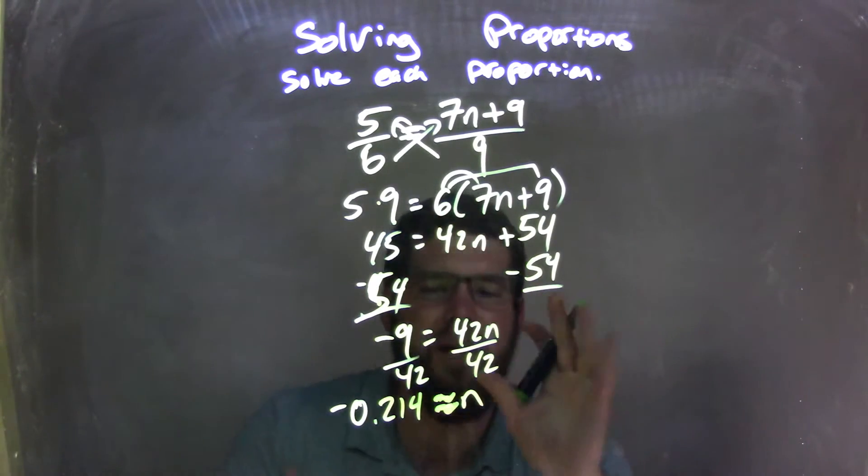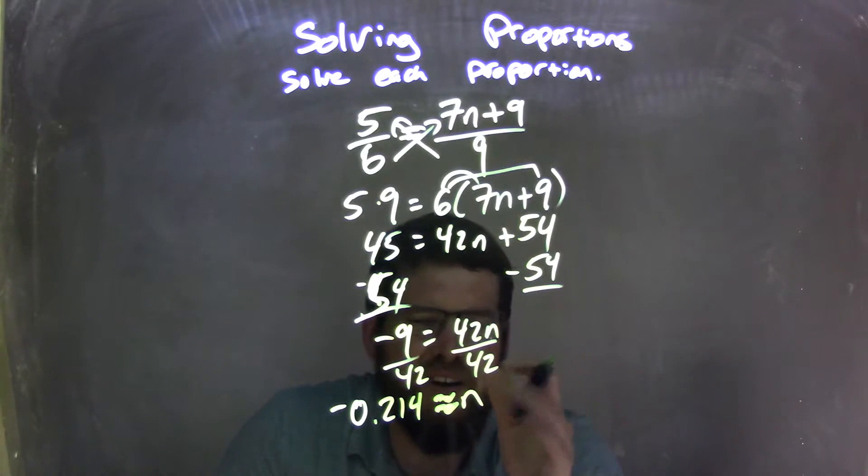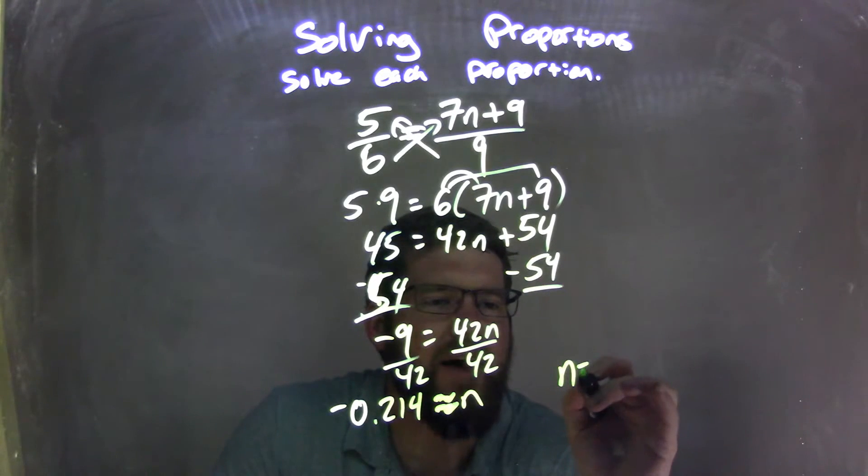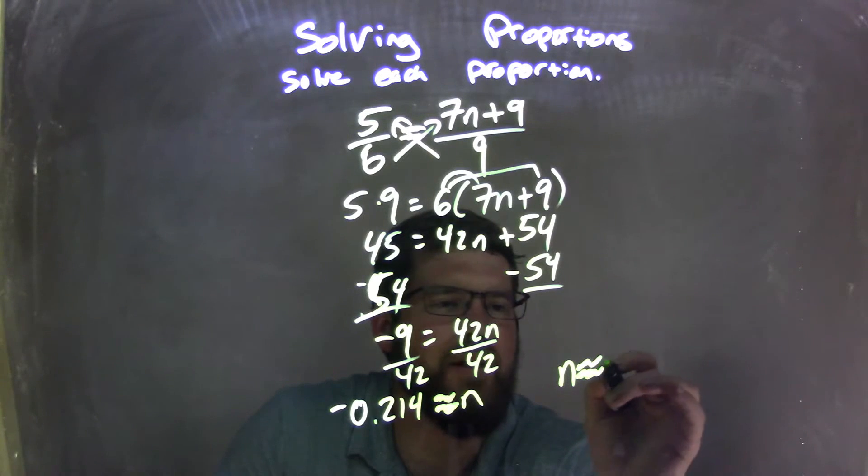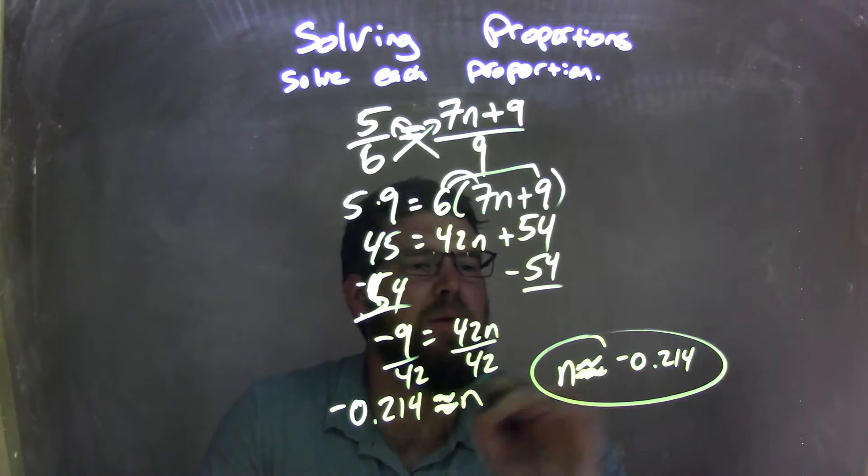Now I didn't specify to what place we're going to round to here. So I can write it with n coming first, so n is approximately negative 0.214 here. You get the gist.